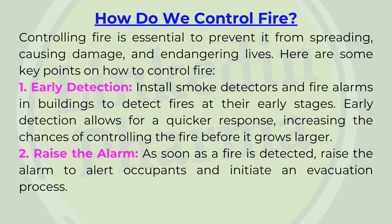How do we control fire? Controlling fire is essential to prevent it from spreading, causing damage, and endangering lives. Key methods include: 1. Early detection — install smoke detectors and fire alarms in buildings to detect fires at their early stages. Early detection allows for a quicker response, increasing the chances of controlling the fire before it grows larger. 2. Raise the alarm — as soon as a fire is detected, raise the alarm to alert occupants and initiate an evacuation process.